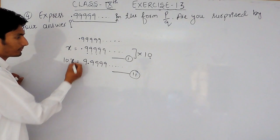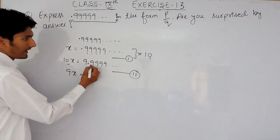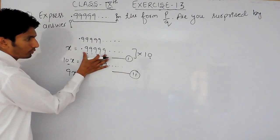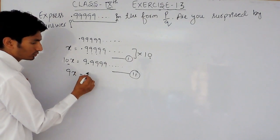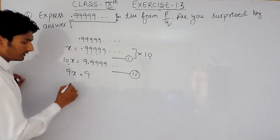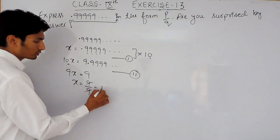Now, you have to subtract these two, so 10x minus x will be 9x. From this, if 0.99999 is subtracted, only 9 will remain. So it will be equals to 9, and the value of x will be 9 upon 9, that will be equals to 1.